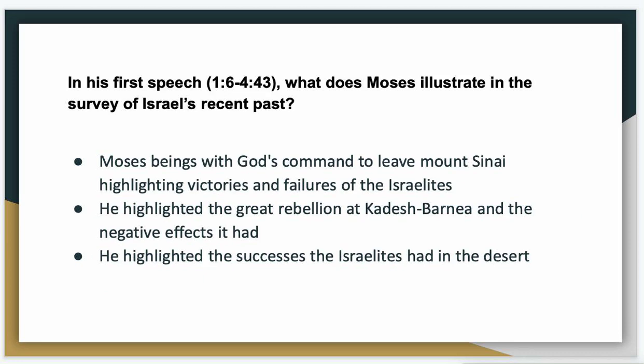Moving on to the next question: what does Moses illustrate in the survey of Israel's recent past? As I mentioned, Moses, right before he let his people into the Promised Land, gave them three speeches. This is touching on the first speech. Moses begins his speech with God's command to leave Mount Sinai, highlighting the victories and failures of the Israelites. He highlighted the great rebellion at Kadesh Barnea and the negative effects it had, and he highlighted the success of the Israelites in the desert.